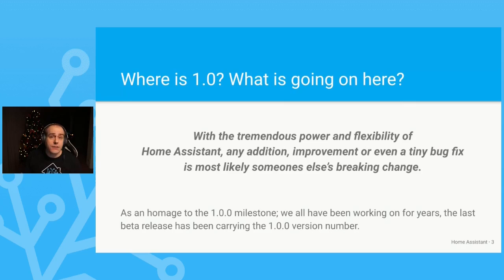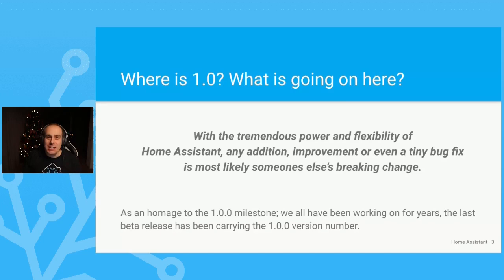Instead, we have chosen a new and different path, which I'll talk about in a moment. First, let's talk about the beta of this release. If you've seen the rumors, it has been carrying the 1.0.0 release marker. So why was that? It's an homage — an homage to the 1.0 milestone that everybody has worked hard on over the past years. I think we made it. 1.0 is here, even though for just a moment and only for this beta. And that's something we should celebrate. Thanks to everybody involved in making that milestone happen. Congratulations to you all.